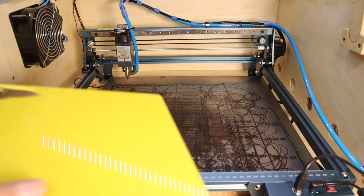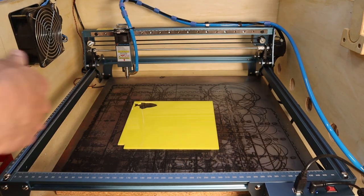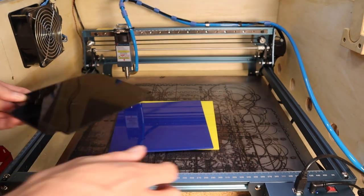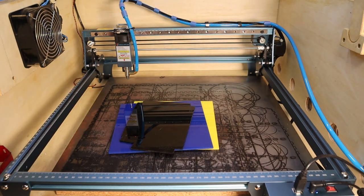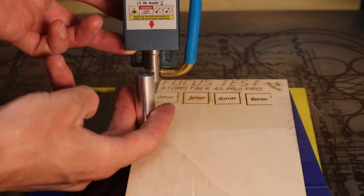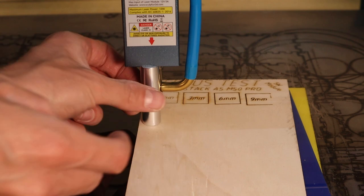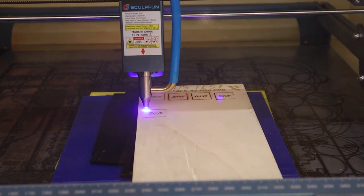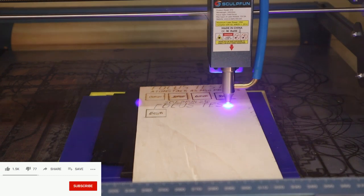The next test on the list is the focus distance test. I start by placing three 3mm acrylic sheets on the laser bed and place the wood board on top. Then, I focus the laser optimally and engrave the text and the first square with 0mm written in it. 0mm is the optimal focus.